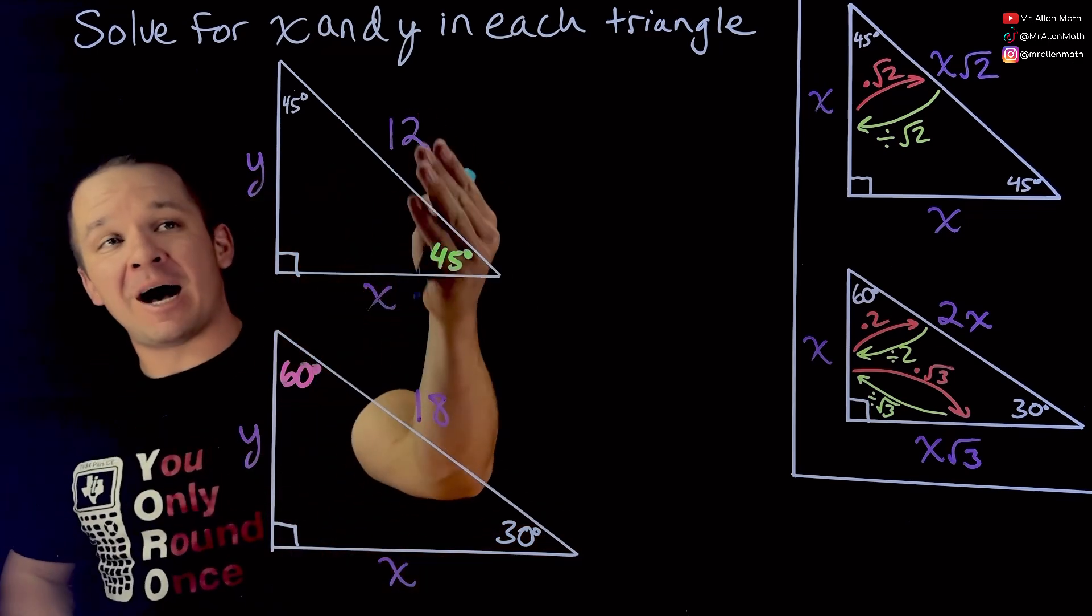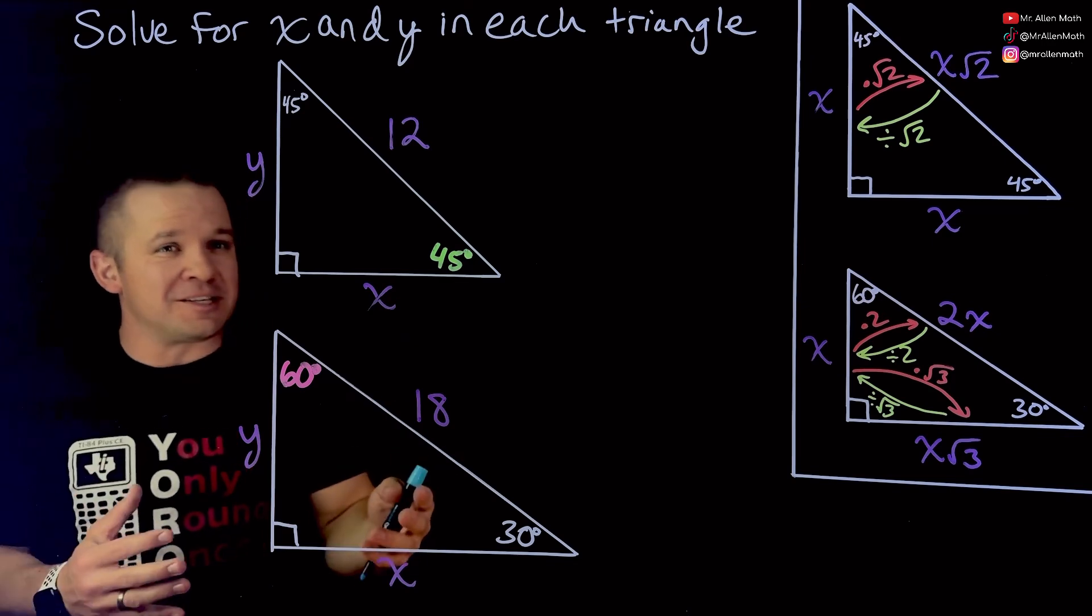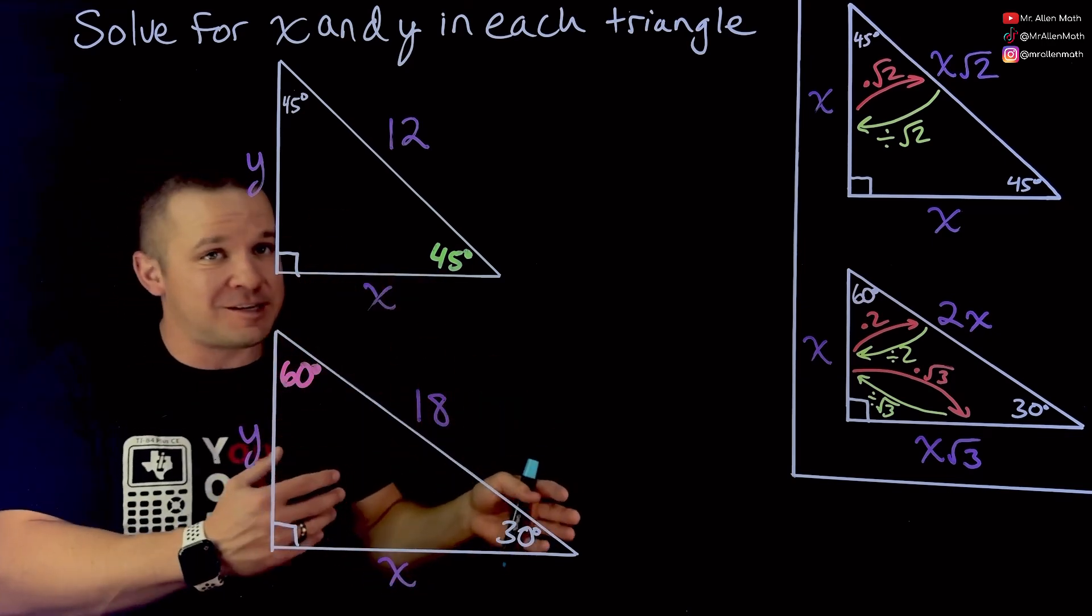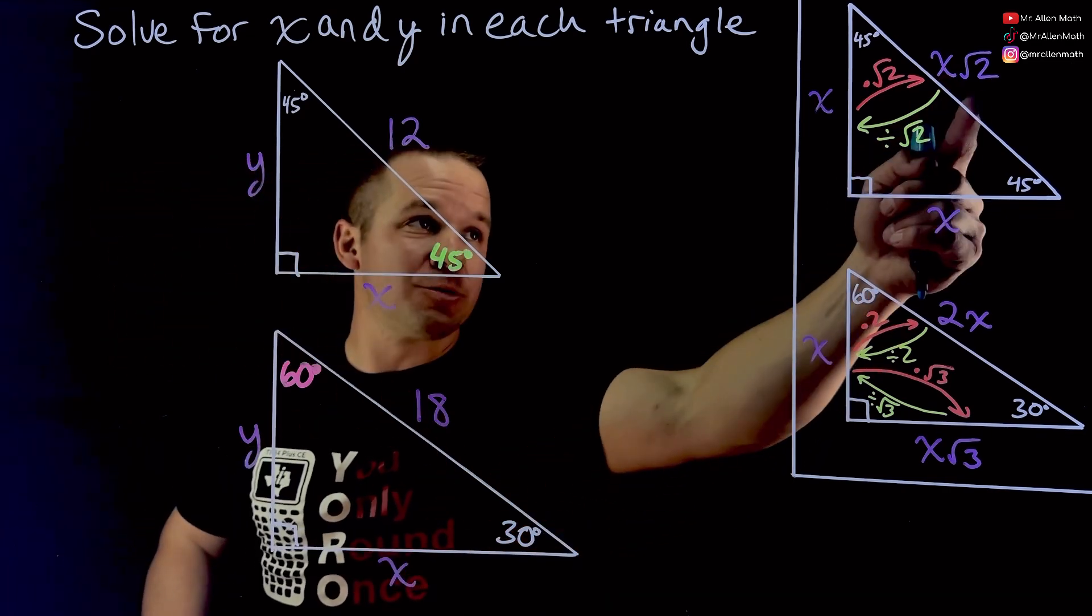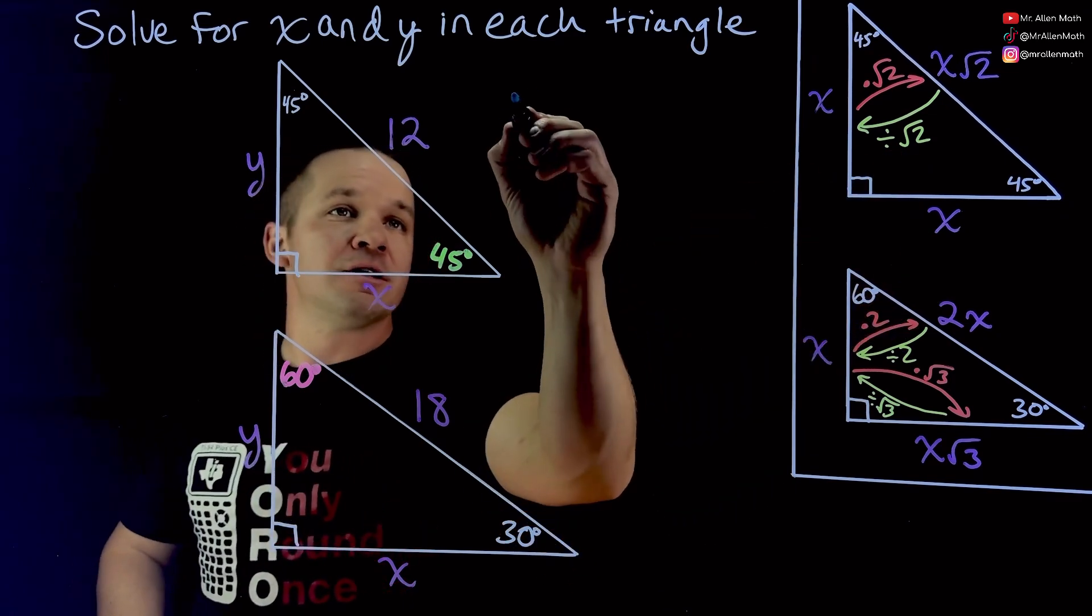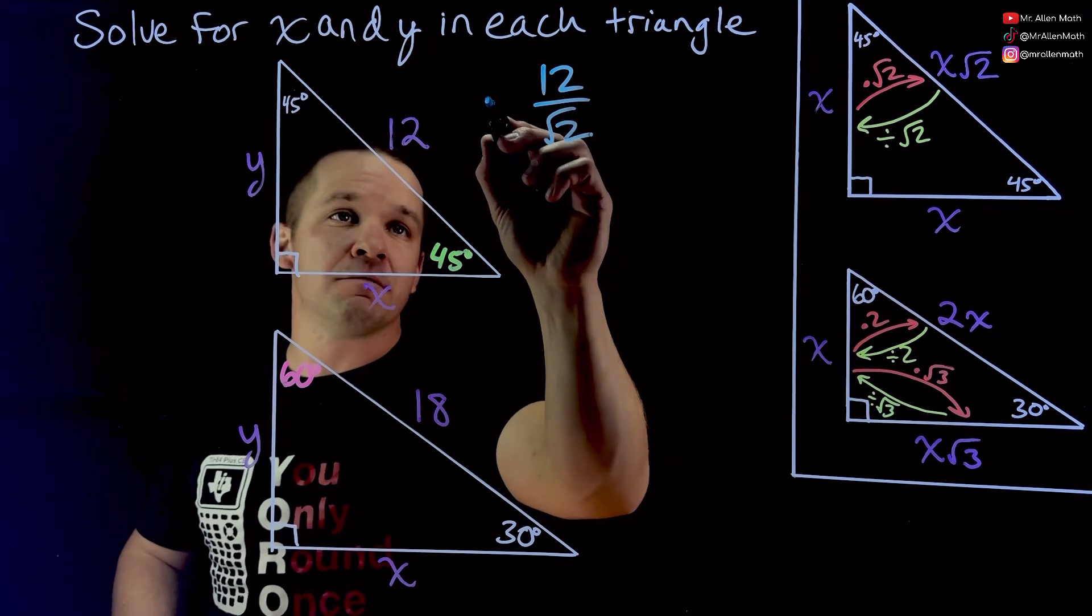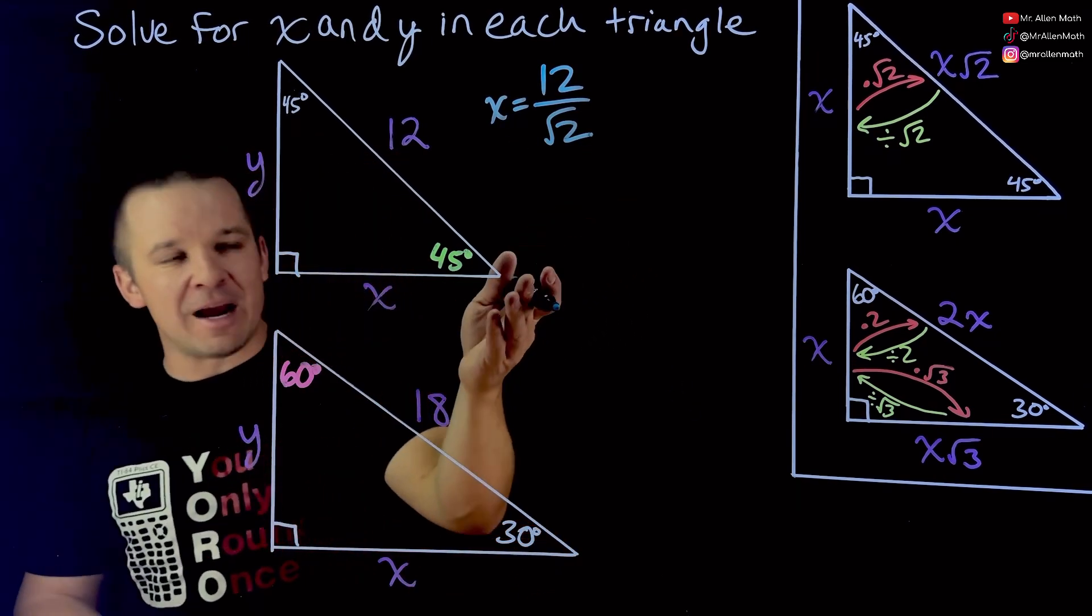So now in this one, I'm given the hypotenuse is 12. And I've got to find my two legs. Well, the nice thing is if I get one leg, I've got the other because these two are congruent. So solving for X gets me Y and vice versa. But how the heck do I get there? Well, if I have this one and I want to get back to my short leg, I have to divide by root 2. So I'm going to take 12 divided by the square root of 2. I can't leave my answer like that.